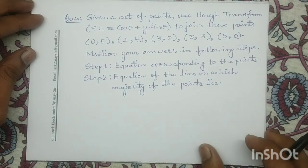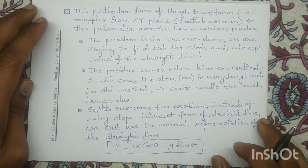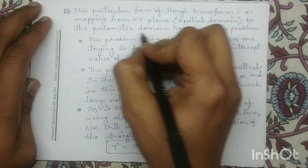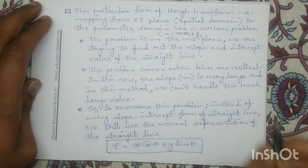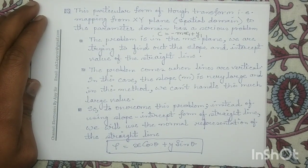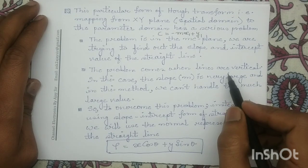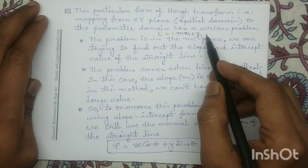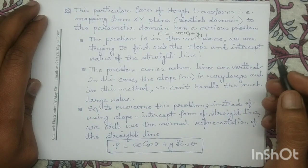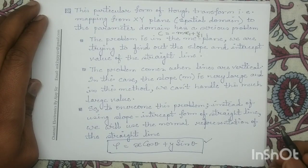In our previous lecture on Hough transformation, we used the equation c = -m·x₁ + y₁ to determine the equation of line for a given set of points. But this equation has a major limitation: if the lines are vertical, or if the slope is very large, we can't use it. To overcome this problem, we will use the equation ρ = x·cos(θ) + y·sin(θ).